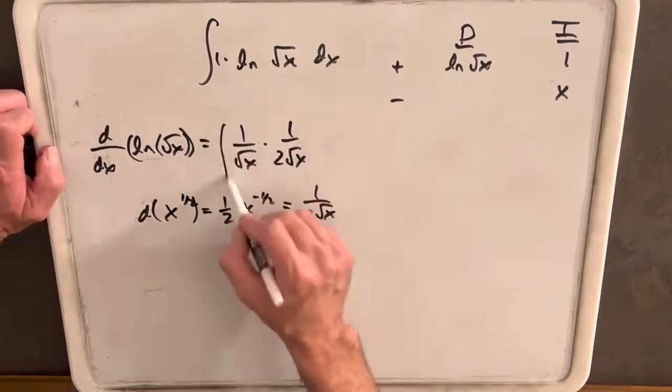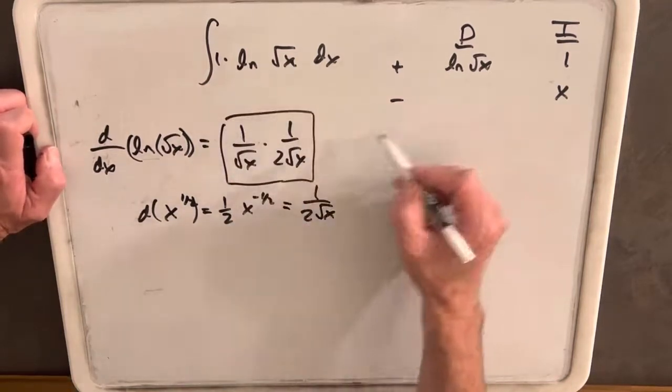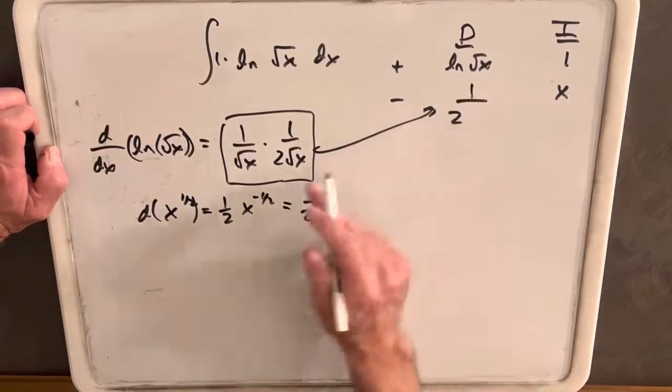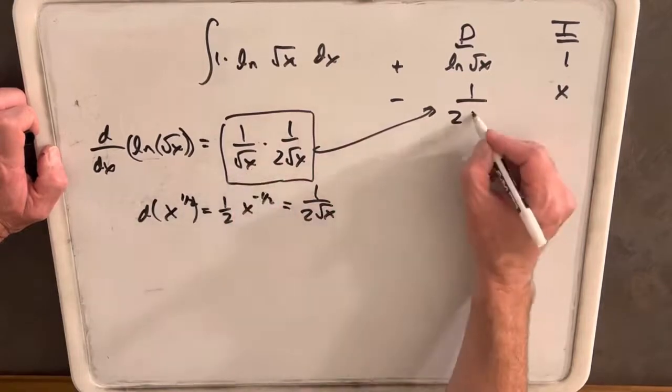Then we can fill this into our table here, and we can write that as 1 over 2 square root of x times square root of x is just x.